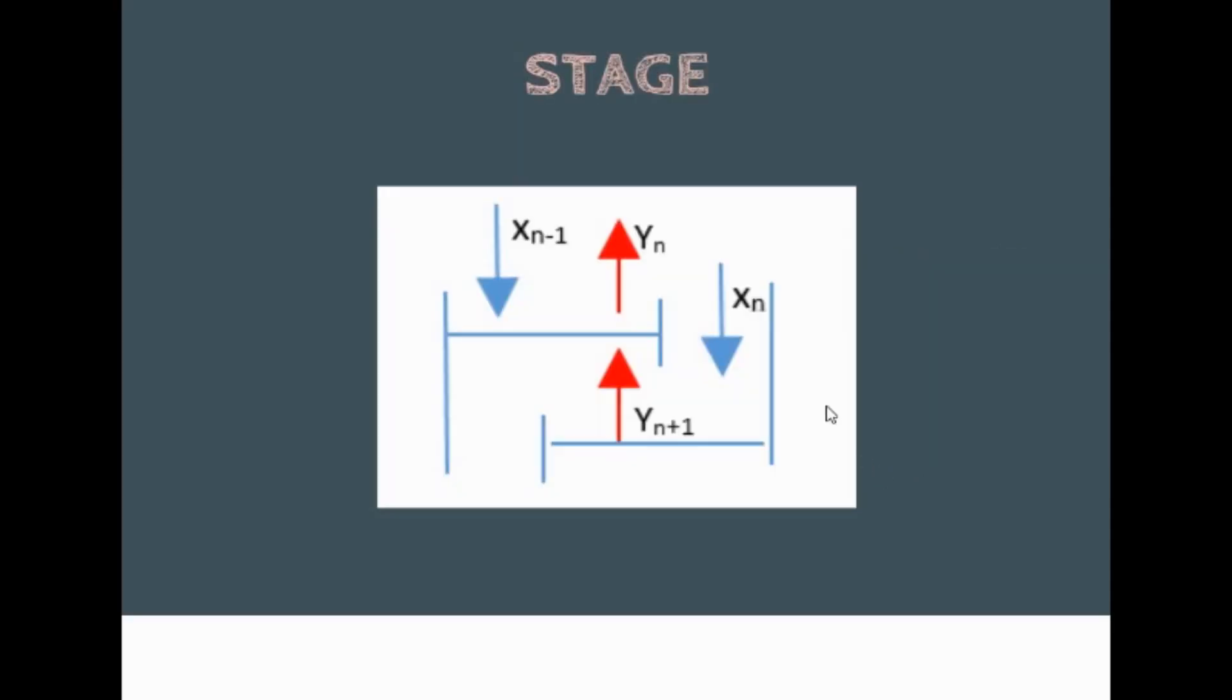Consider this figure. We denote X as the liquid mole fraction of the more volatile component and Y as the vapor mole fraction of the more volatile component. Say, for example, this is plate N. The subscripts of this one and this one is N, since they are leaving the N plate. This one is denoted as XN minus 1 because it leaves the N minus 1 plate. And this one is denoted as YN plus 1 because it leaves the N plus 1 plate.